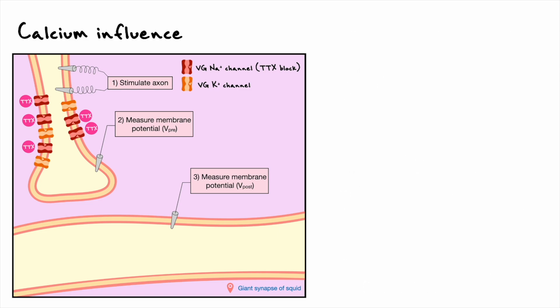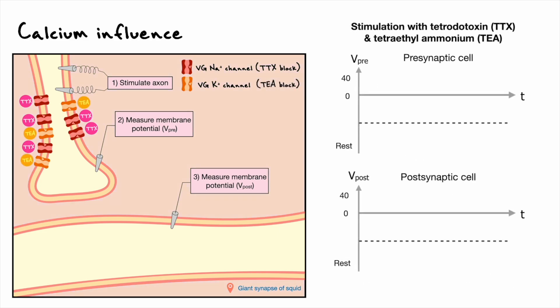They then turned their attention to potassium and added tetraethyl ammonium to the TTX solution to block voltage-gated potassium channels. Here again, after a current is injected, transmission still occurs. The results here are a bit different, as the action potentials are sustained throughout the current pulse. This is explained by the fact that the inactivation of potassium prevents the repolarization phase, and thus, the cell stays depolarized.